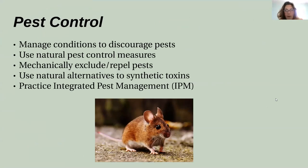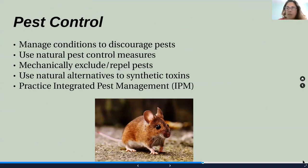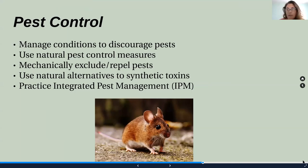Some really simple ways to reduce or stop using poisons are to manage your conditions. For example, if you have mice, managing conditions might mean clearing out the weeds around your foundation and finding the entry holes. In a compost system, it might be a very similar process — look for where the pests are coming in. There are all kinds of insects that people are trying to control in their yard. Start by managing your conditions: what can you do to the environment to discourage the pests?